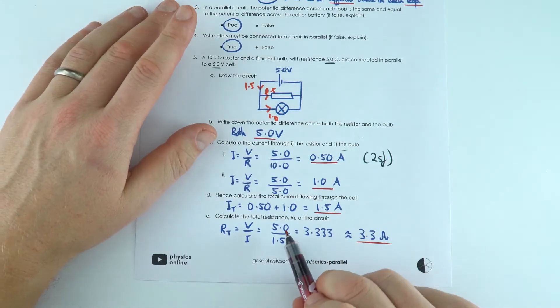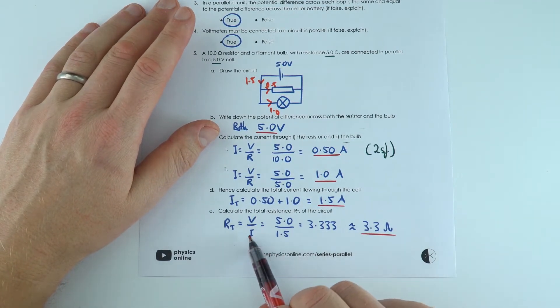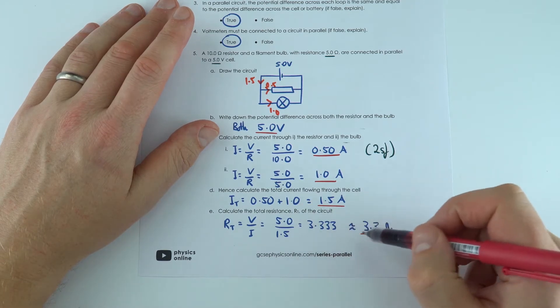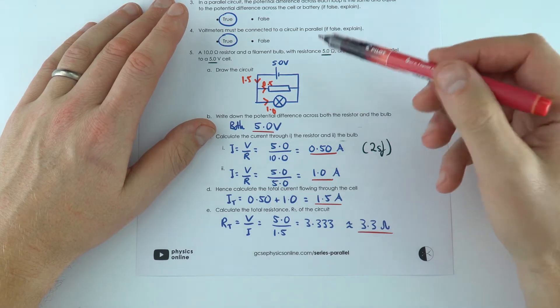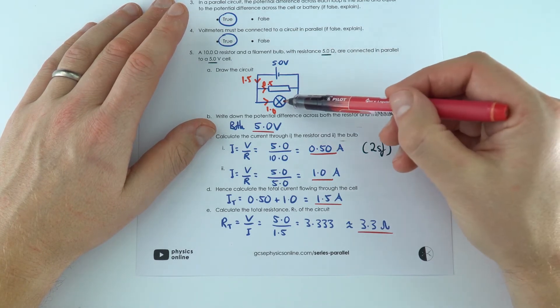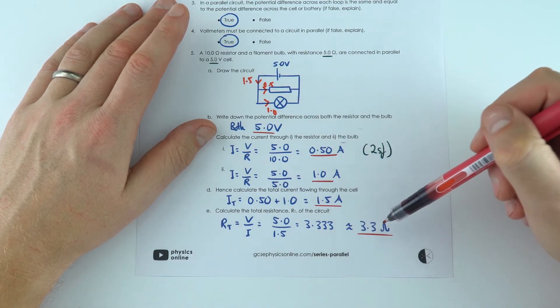And to work out the total resistance I'm just saying this is equal to the potential difference of the cell divided by the current from the cell which gives 3.3 ohms. So what we can see here is that even though there's a 5 and a 10 ohm component their combined resistance is lower at 3.3 ohms.